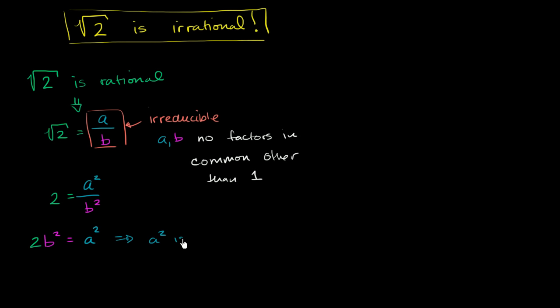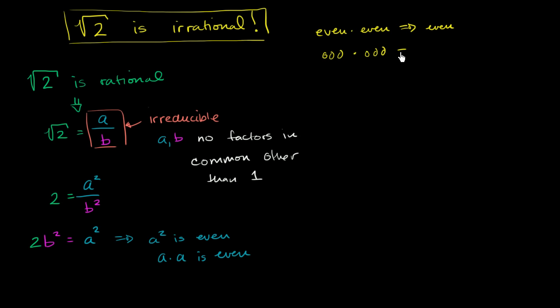Now, why is that interesting? Well, a squared is the product of a times a. So this is another way of saying that a times a is even. What does that tell us about a? Well, a is either going to be even or odd. If we multiply an even times an even, we get an even number. If we multiply an odd times an odd, we get an odd number. So we have a number times itself equaling an even number — the only way to get that is if that number is even. So this tells us that a is even.